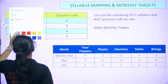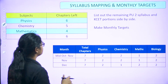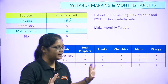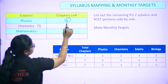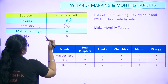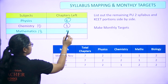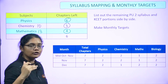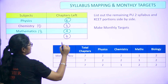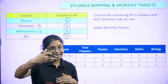Moving forward, we have syllabus mapping and monthly targets. Based on discussions with students about their midterm syllabus, in physics six more chapters are left out of 14; in chemistry, about five chapters are left out of 10; in mathematics, four chapters are left out of 13; and in biology, six chapters are still left to be taught. This may vary based on your school or college syllabus.